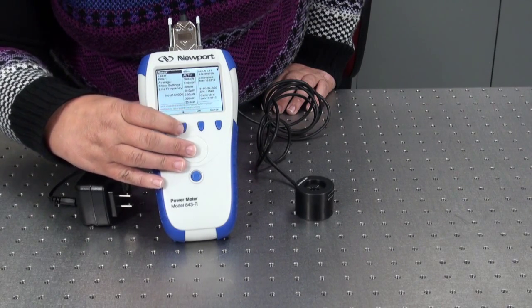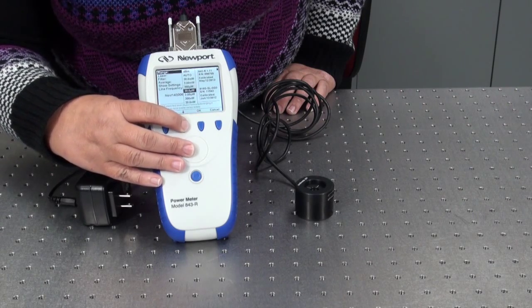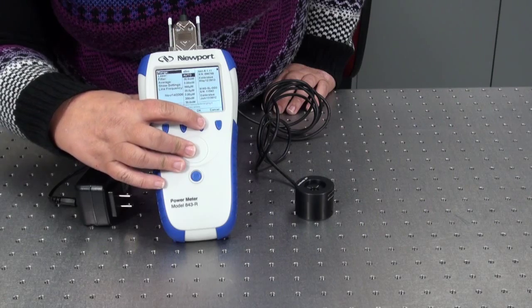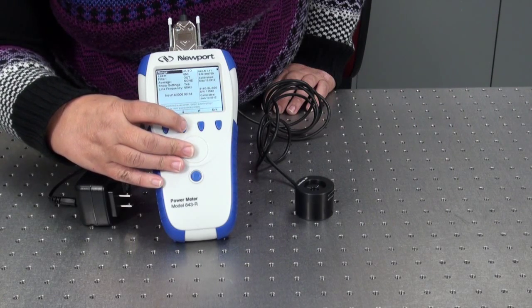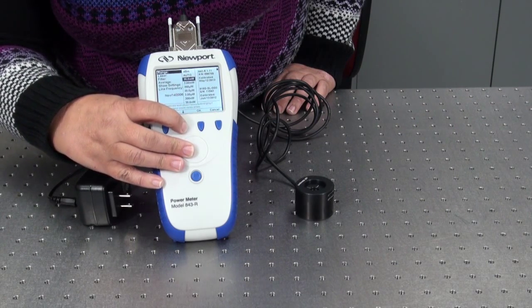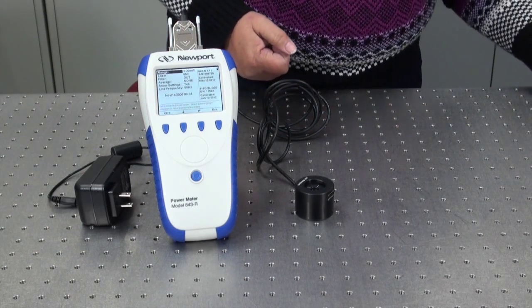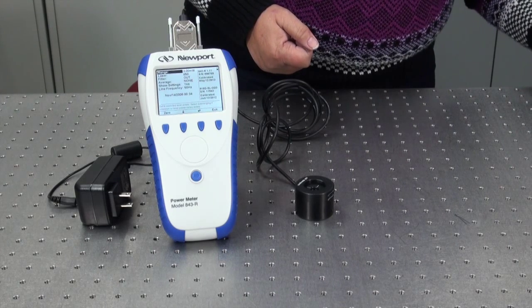The range menu allows you to select between auto-ranging and manual-ranging. Select manual-ranging if you know your light source power, then select the correct range for measuring that power. Select auto-ranging if you are not certain of the power of your light source or if you will be measuring through a broad power range.